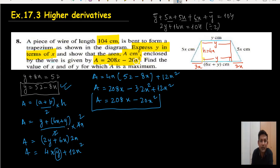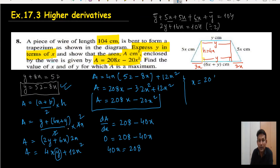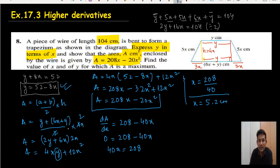Now find the value of x and y for which the area is maximum. We differentiate dA/dx and set it to zero. Differentiating 208x minus 20x squared gives 208 minus 40x. Setting equal to zero: 40x equals 208, so x equals 208 divided by 40, which is 5.2 centimeters.